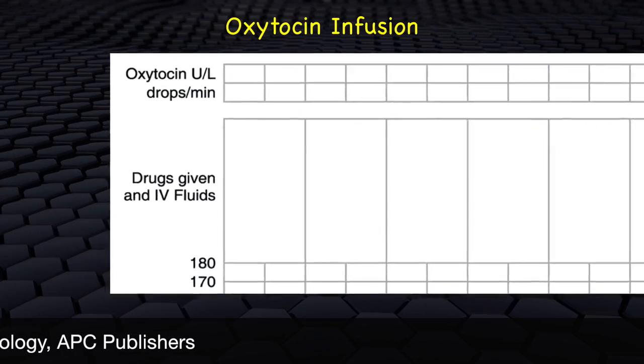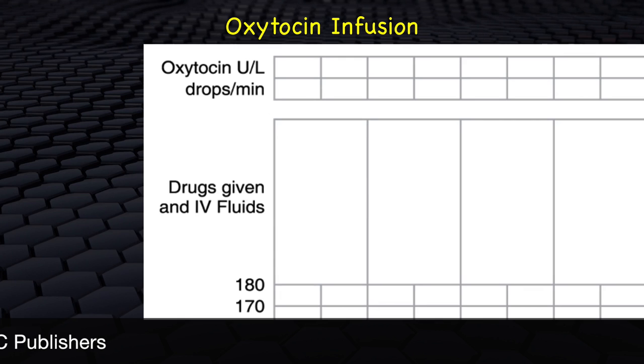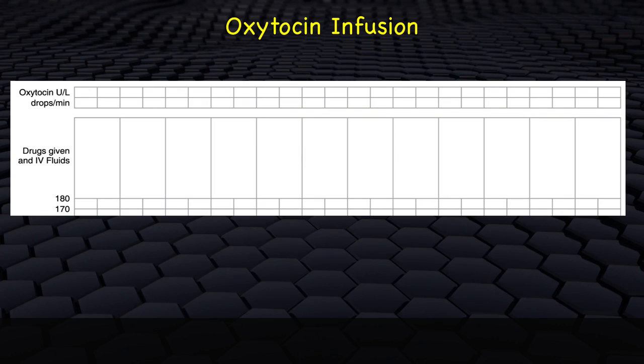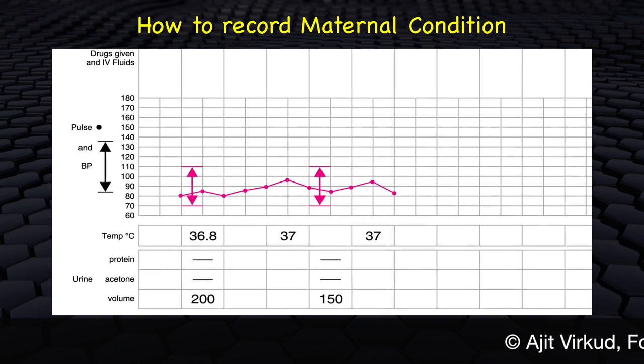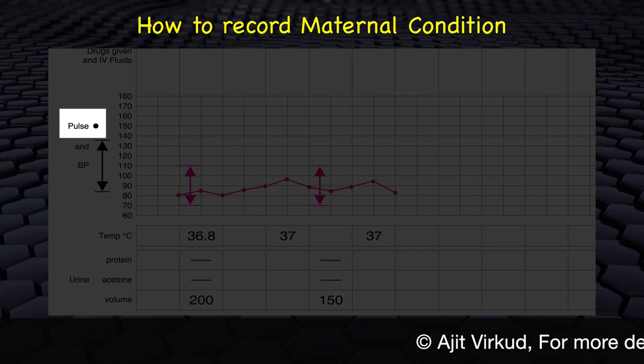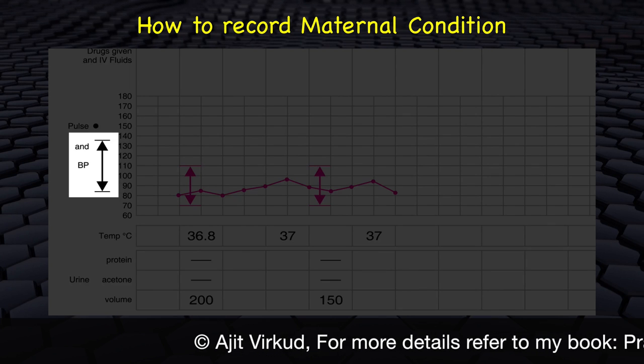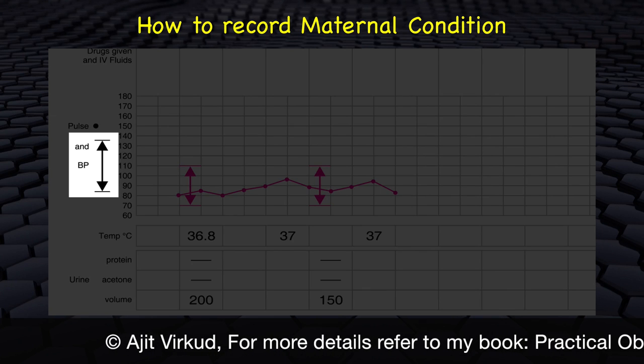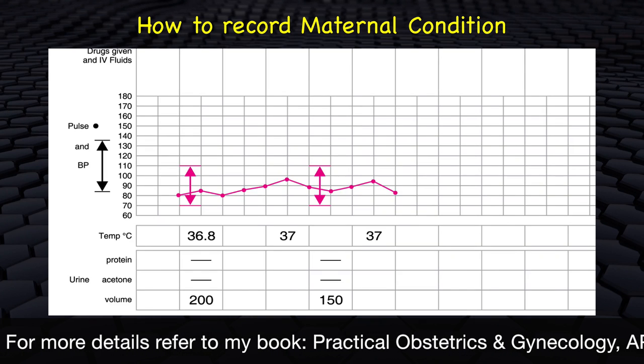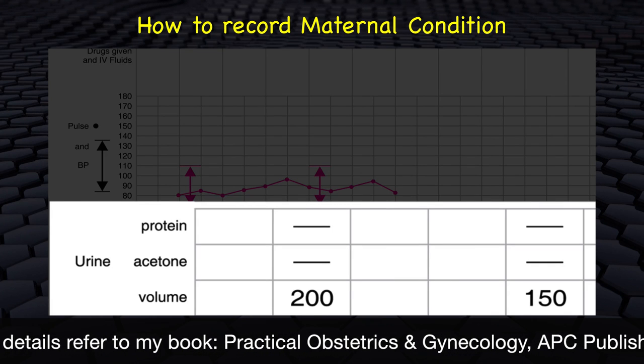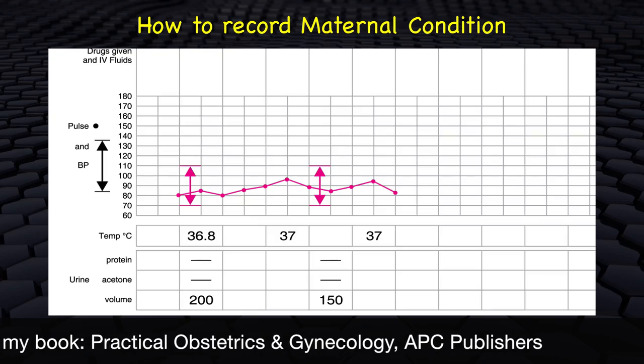If oxytocin augmentation is done, record the amount and drip rate every 30 minutes. Record any additional drugs such as antibiotics if given. How to record maternal condition. Record maternal pulse every 30 minutes and mark it as a dot and blood pressure every 4 hours. It is marked in up and down arrows and temperature every 2 hours. Measure urine sample for amount, albumin and acetone from time to time.